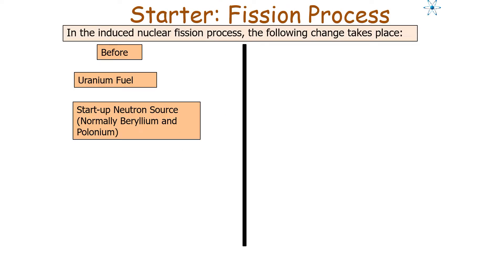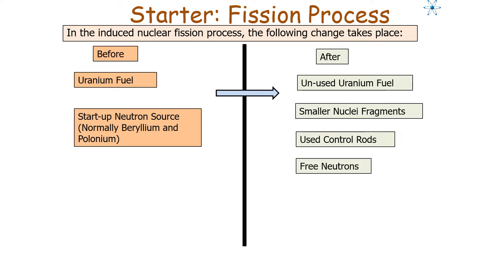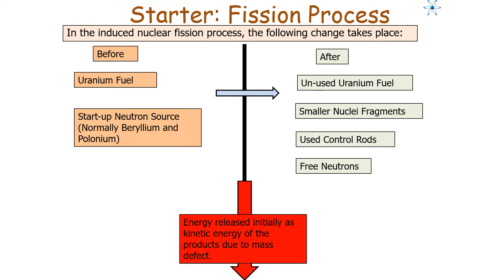In an induced nuclear fission process, beforehand you have uranium fuel and a startup neutron source — either beryllium or polonium. After the fission process, you'll have some unused uranium fuel, smaller nuclei fragments from the fission process, used control rods, free neutrons, and energy released as kinetic energy of the products due to the mass defect.